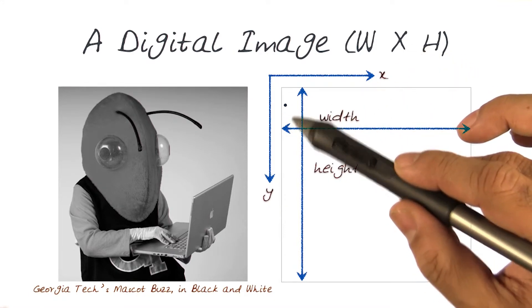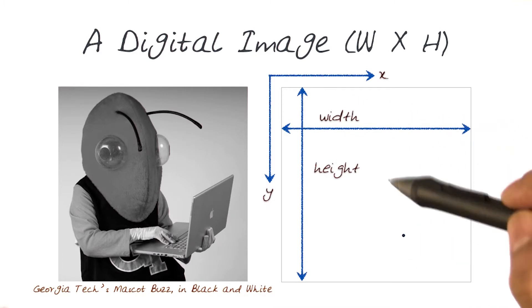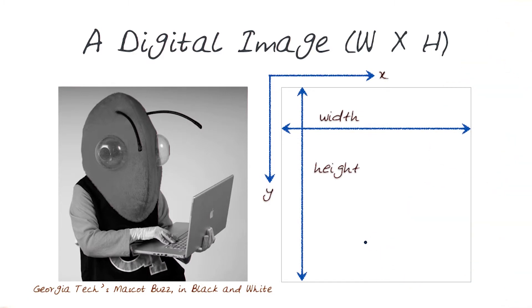Width represents the number of columns that would exist in this image, and the height represents the number of rows that represent this image. This is a square image, a classic image.